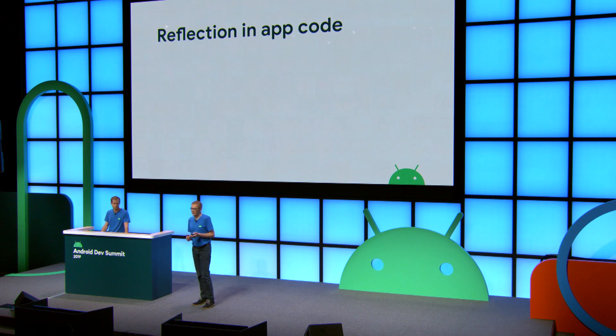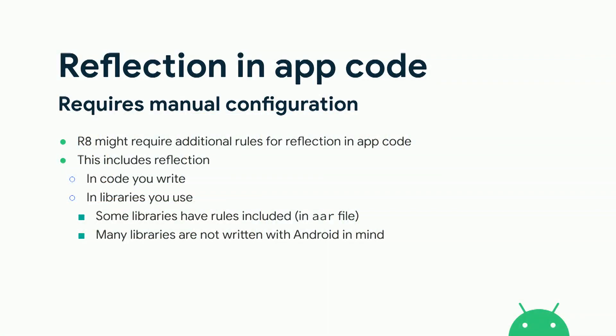With all the entry points in place, there's one more area that needs configuration for the app to work after shrinking: reflection in application code. Reflection can be seen as an entry point into the code that R8 doesn't recognize by just tracing. Keep in mind that reflection can happen in third-party libraries, and as those libraries are now effectively part of your app, you also become responsible for the reflection they perform. Some libraries come with their own rules included, but quite a few libraries are not written with Android or shrinking in mind, so they might need additional configuration.